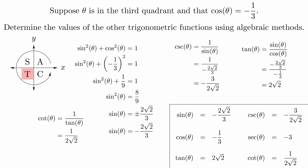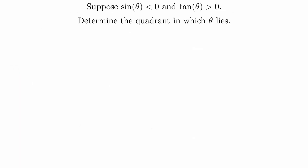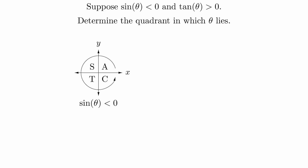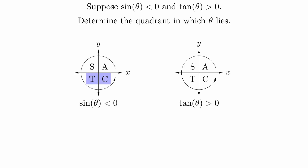There are times when we aren't going to be given the specific quadrant that the angle is in, which will require us to employ some higher level reasoning skills. For example, if we know that sine theta is negative but tangent theta is positive, what quadrant must the angle be in? Knowing that sine theta is negative, the angle must be in quadrant 3 or quadrant 4. And knowing that tangent theta is positive, the angle must be in quadrant 1 or quadrant 3. Therefore we can conclude that the angle must be in quadrant 3.